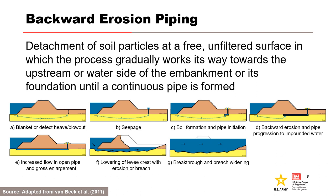In this series of graphics, the potential failure mode is depicted to first initiate due to heave of a clay blanket (Figure A), causing seepage from the sand substratum (Figure B). Flowing water in the sand substratum can cause migration of sand particles, causing it to boil out of the ground, which can result in formation of a void or pipe below the boil (Figure C). If a pipe forms and progresses through the sand substratum to the river or reservoir and continues to enlarge, it can eventually cause collapse of the overlying embankment and breach (Figures D through G).